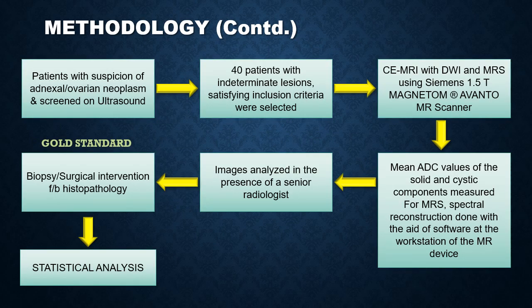Patients with clinical suspicion of adnexal or ovarian neoplasms were screened on ultrasound. Forty patients were selected with indeterminate lesions satisfying the inclusion criteria. They underwent contrast-enhanced MRI with DWI and MRS using the Siemens 1.5 Tesla Magnetom Avento MR scanner at the institute. The mean ADC values of the solid and cystic components were measured. For MRS, spectral reconstruction was done with the aid of software at the MR device workstation. All conventional MRI sequences were also obtained and images were analyzed in the presence of a senior radiologist. Patients then underwent biopsy or surgical interventions followed by HPE diagnosis. Statistical analysis was done on SPSS version 22 software.